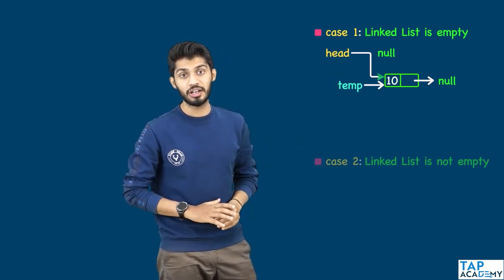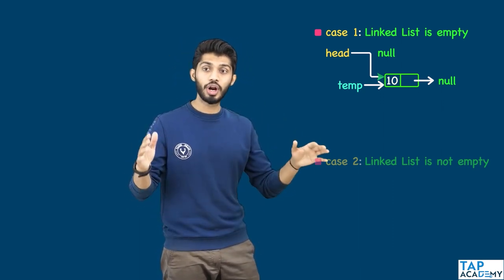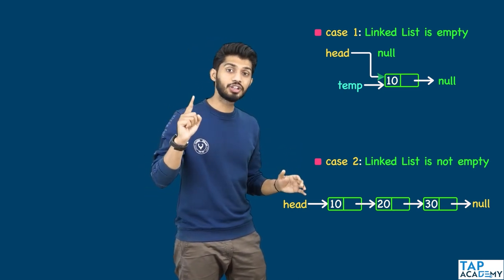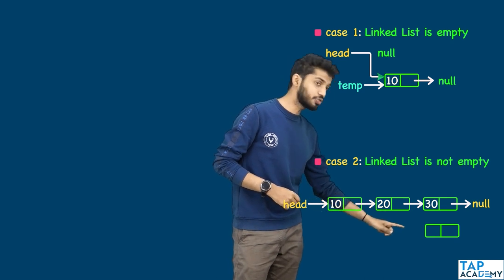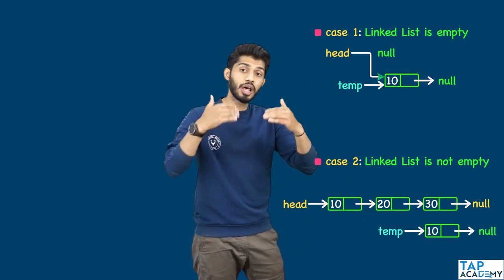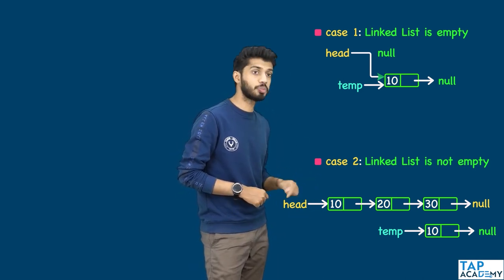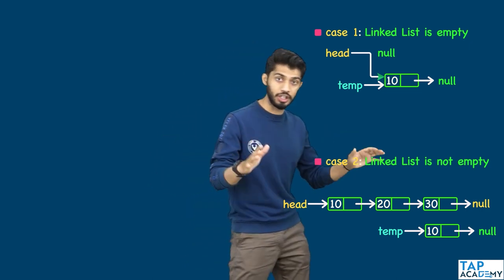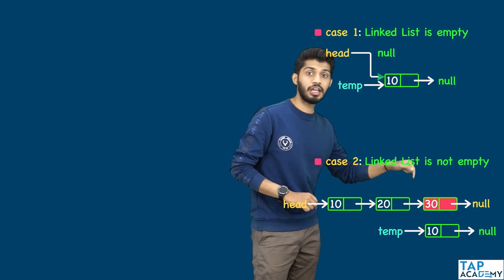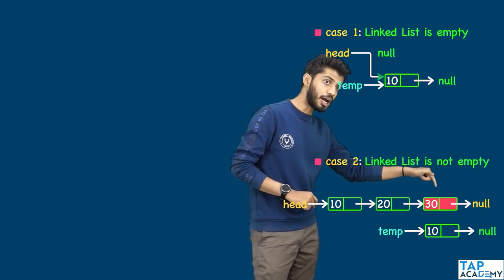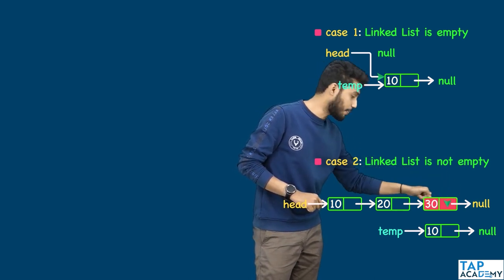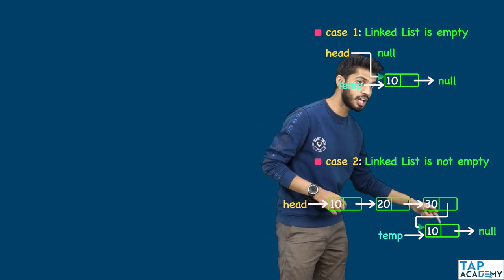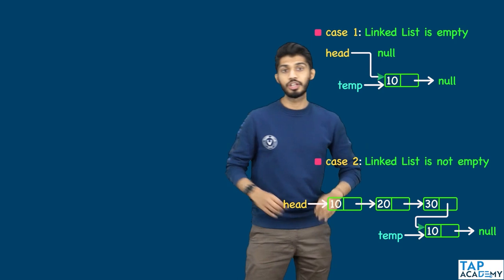Now let's see how we add an element when the linked list is not empty. Assume we already have a linked list. The first thing we do is create a new node, and its reference is stored in 'temp'. We check if head is pointing to null — it is not, so the linked list is not empty. The last node currently has its next part pointing to null. Rather than null, that next part should start pointing to temp so that the new node gets added to the list.